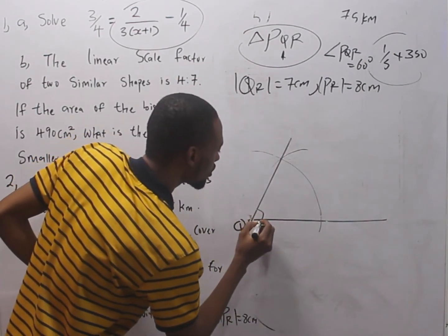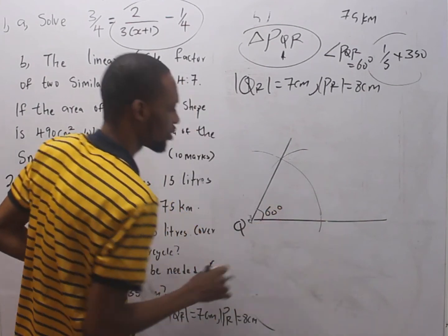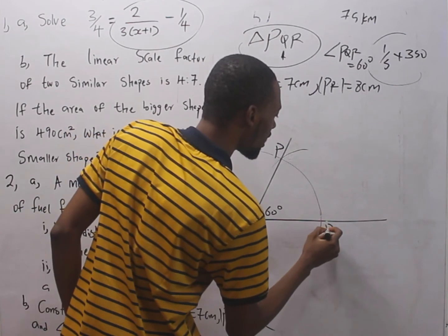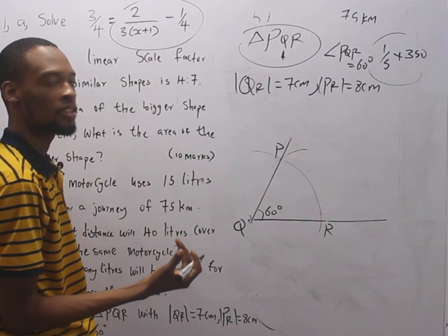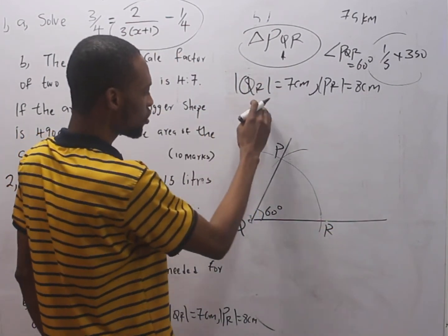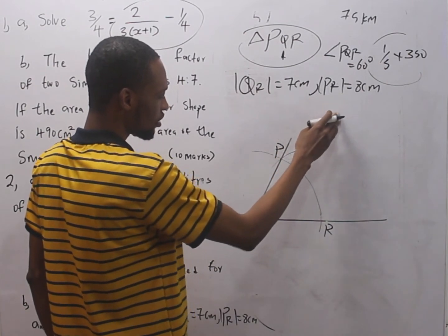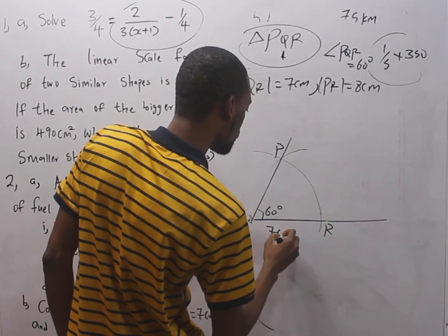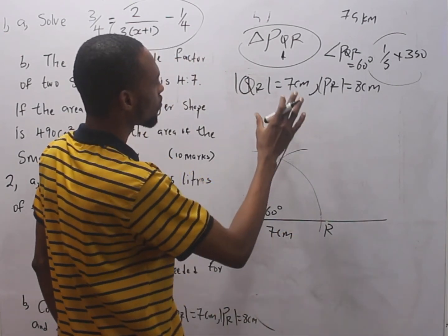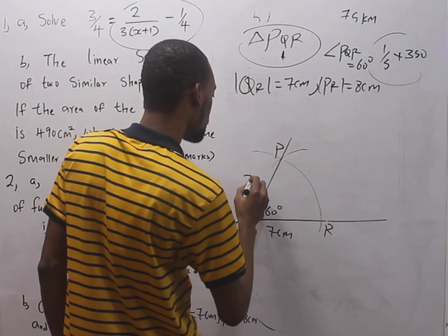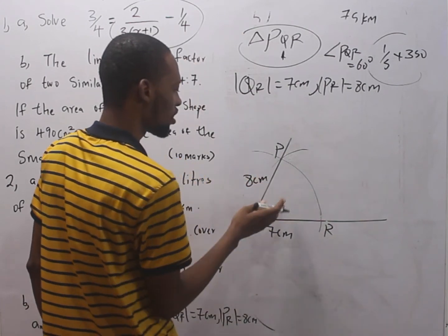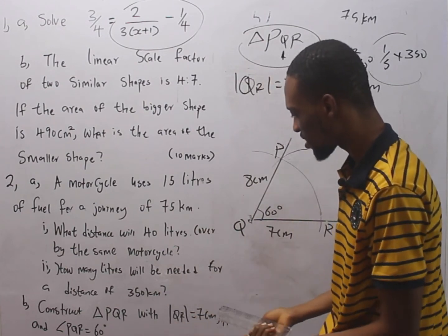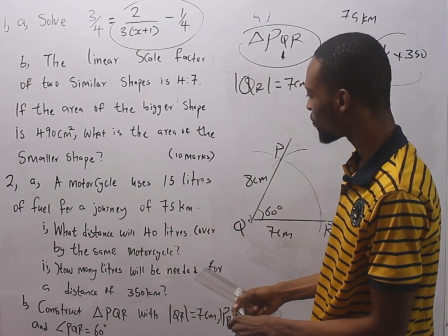This is 60 degrees. You can call it P, Q, call it R. These are the sides. You are told that QR is 7 cm. This means from Q to here, this is 7 cm. PR is 8 cm. So we are given the angle. I think that is all we need for that.